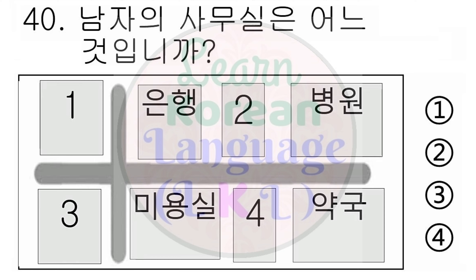33번. 오늘이 무슨 요일이에요? 1번. 수요일이에요. 2번. 오늘은 바빠요. 3번. 제 생일이에요. 4번. 토요일도 일해요. 다시 들으십시오. 오늘이 무슨 요일이에요?